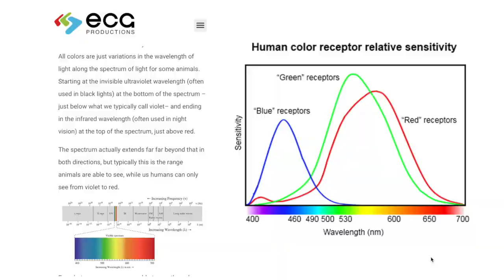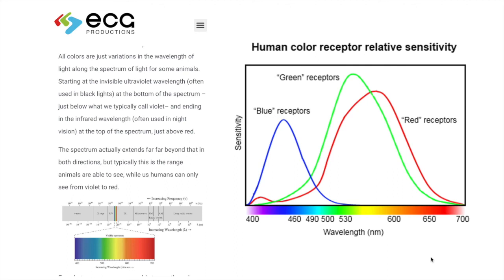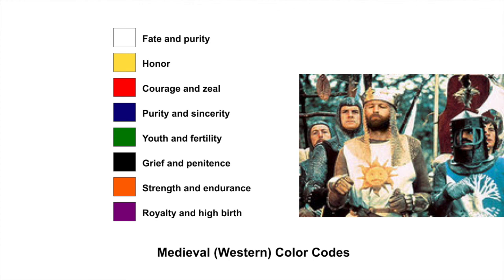All colors are just variations of the wavelength along the spectrum of light. Some animals, like birds, actually see more colors than we do. It's important to remember that this narrow wavelength exists in the spectrum between x-rays, ultraviolet, and infrared, and below microwave, FM, and long radio waves — the visual spectrum is only a very narrow slice of that. So it puts into context a lot of what light actually is.